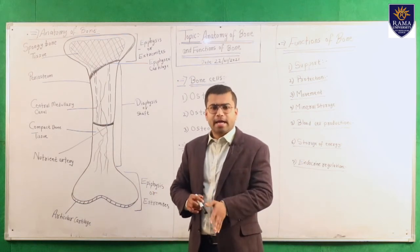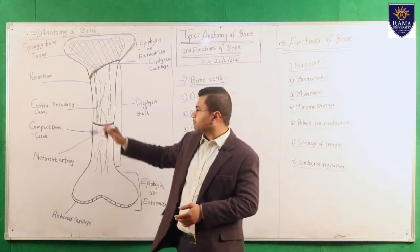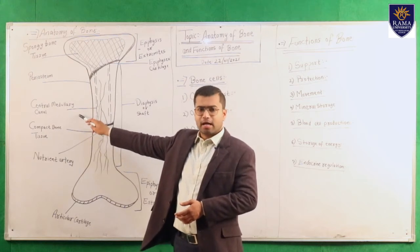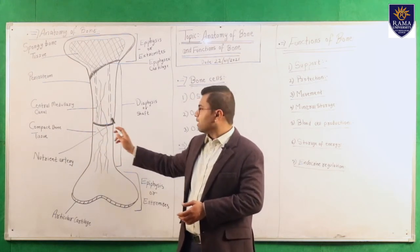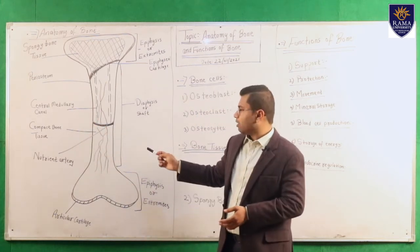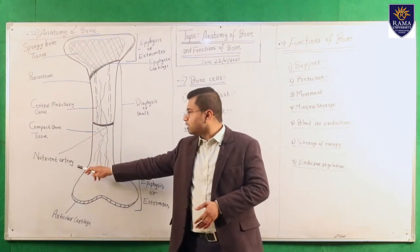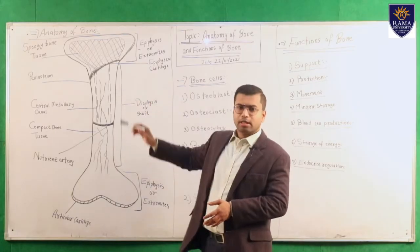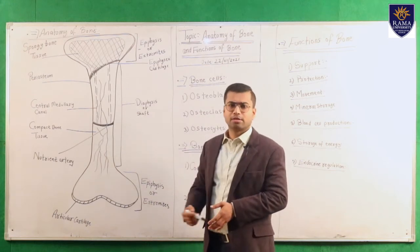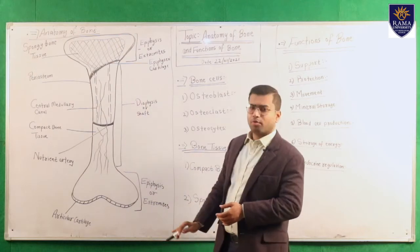The outer covering of the bone is known as the periosteum, which itself has two layers: an outer layer and an inner layer. Inside the diaphysis, there is a central medullary canal. This canal is responsible for the formation of blood cells and also supplies nutrients to the bone through the nutrient artery. The nerve supply is through sensory supply.